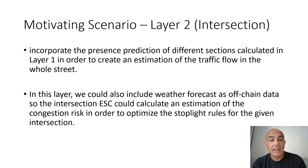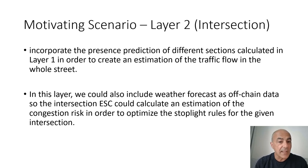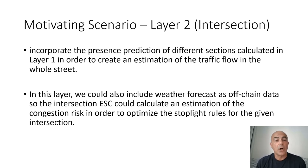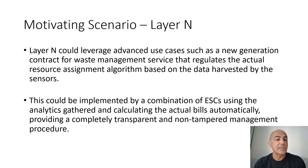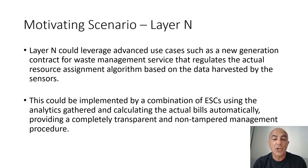The next layer, namely the intersection layer, could incorporate the presence prediction calculated in layer one to create an estimation of traffic flow in the whole street. In this layer, we could also include weather forecast as off-chain data, so the intersection Elastic Smart Contract could calculate an estimation of the congestion risk in order to optimize stoplight rules for the given intersection. We can add arbitrary layers, such as layer N, that could leverage advanced use cases like new-generation contracts for waste management services that regulate the resource alignment algorithm based on data harvested by the sensors, implemented by a combination of Elastic Smart Contracts, calculating bills automatically and providing completely transparent and non-tampered management procedures.